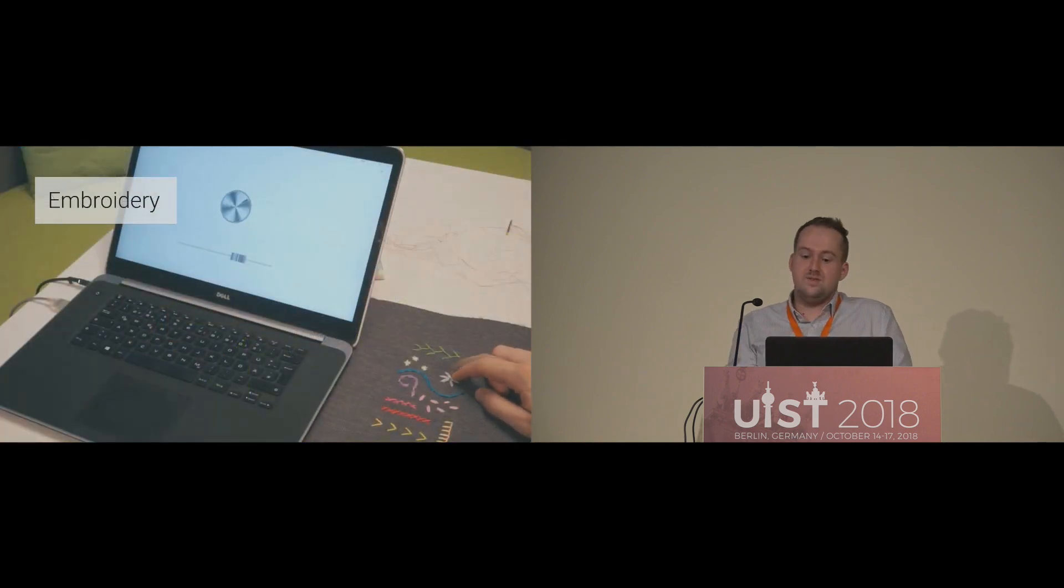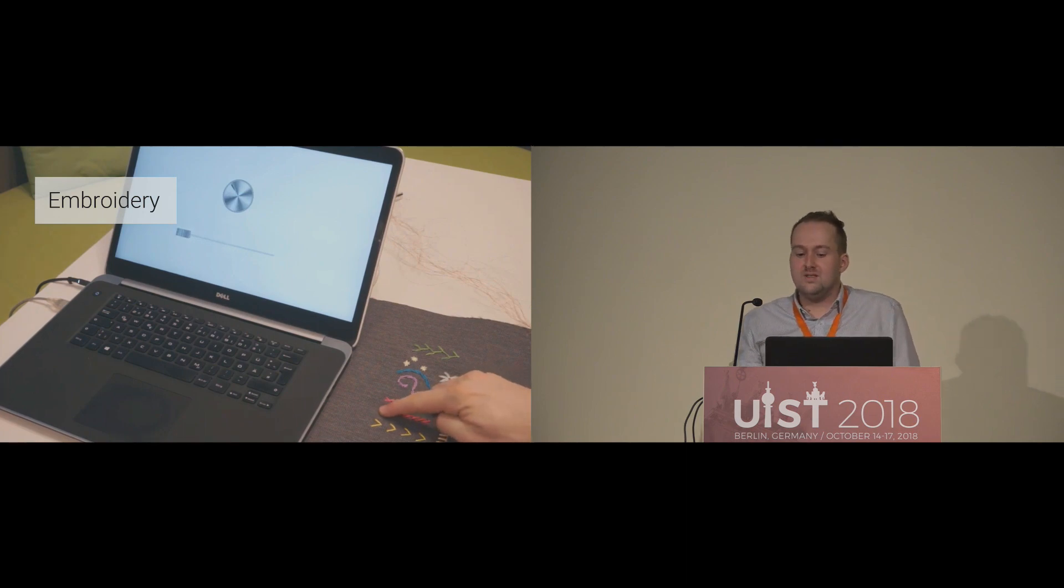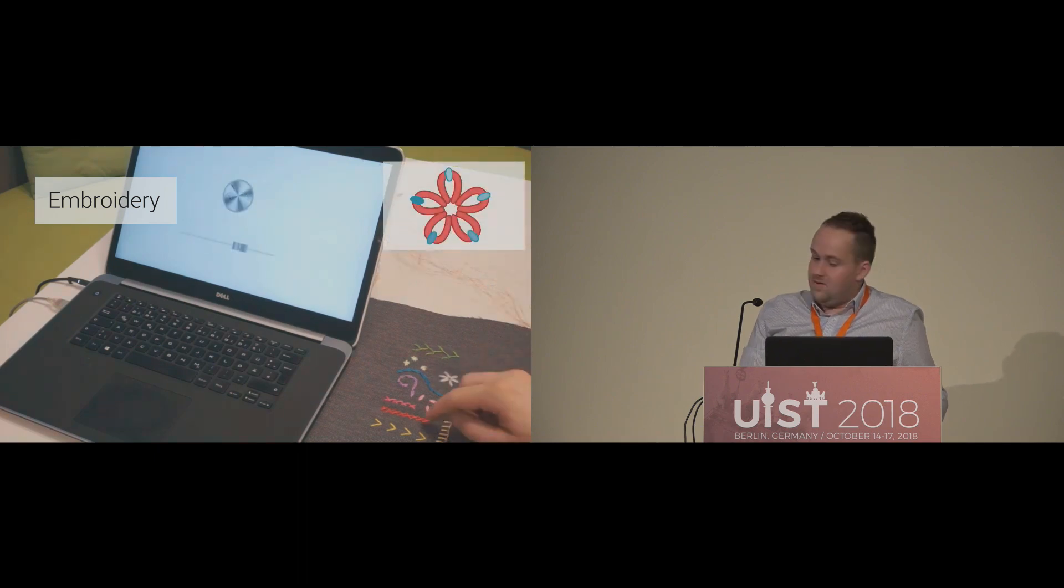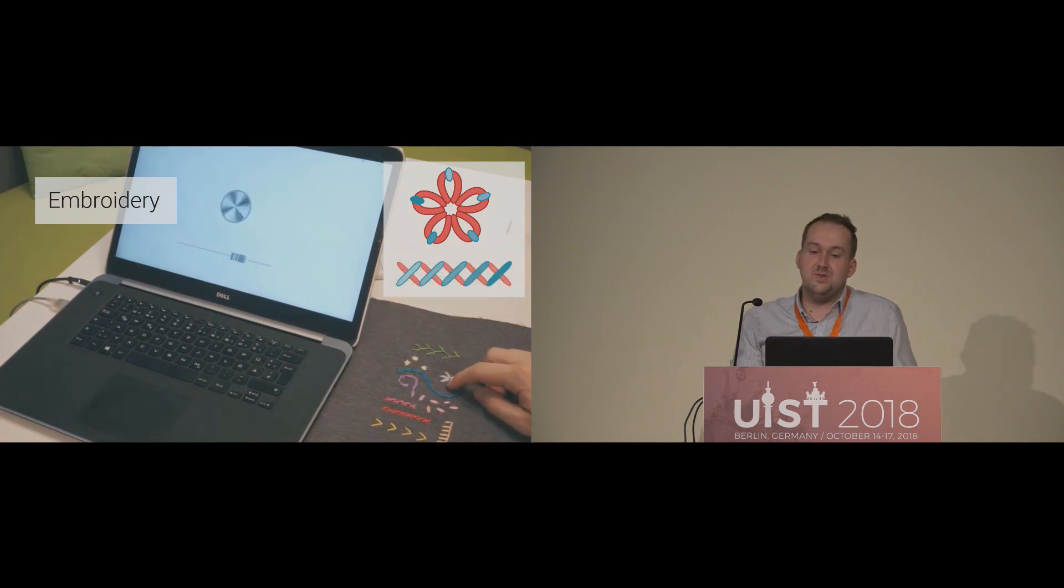Moreover, we wanted to show that even different stitching patterns can be used to create interactive surfaces. Embroidery is used for embellishment of fabrics. Similar to other techniques, it creates intersections between two resistive yarns. As you can see here in this video, we used different stitching patterns, such as a lazy-daisy stitch, which works as a rotational control, or a criss-cross stitch, which we use as a slider.